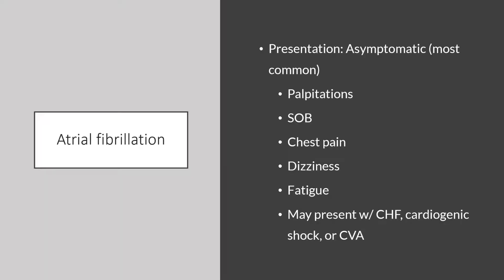Most commonly, our patients with atrial fibrillation are going to be asymptomatic. However, if they do become symptomatic, they may present with palpitations, shortness of breath, chest pain, dizziness, and fatigue. Additionally, these patients may present in the context of congestive heart failure, cardiogenic shock, or cerebrovascular accidents such as strokes or TIAs.